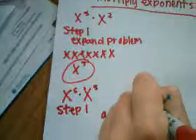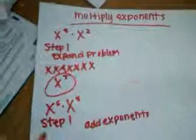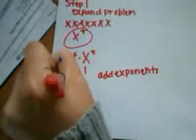So, now you just add the exponents. So, you would do five plus six equals eleven.